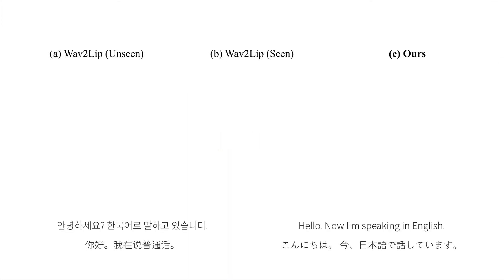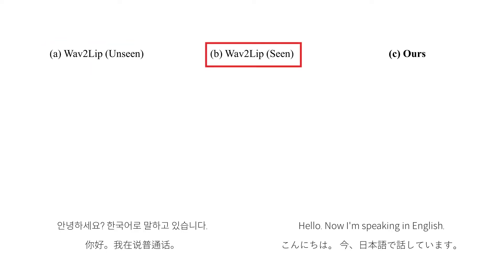In this part, we'll compare the outputs of our work with the outputs of two Wave2Lip models. Wave2Lip unseen is taken directly from the official demo of Wave2Lip and is not trained on any target speaker data. Wave2Lip seen is trained from scratch solely on the target speaker data. We'll take a look at the output videos for three models for each language.